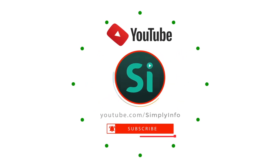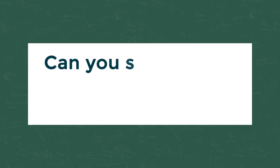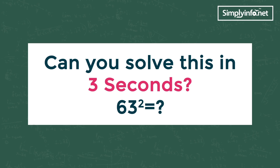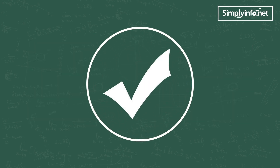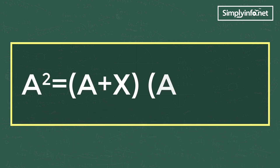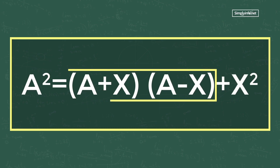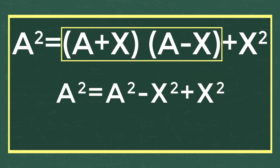Can you solve 63 square in three seconds? The answer is yes if you know this formula: a square equals a plus x into a minus x plus x square. As we know, a plus x into a minus x is equal to a square minus x square, so by canceling the plus x square and minus x square we are getting a square.